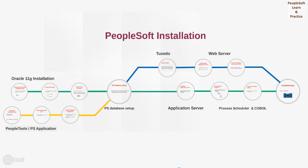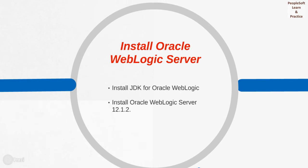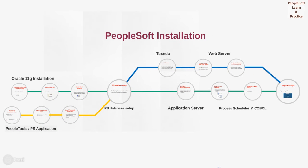Now we need to create a web server and app server. First, we need to install Tuxedo — there is an installation file downloaded from eDelivery and we run through that to install Tuxedo. After installation of Tuxedo, install Oracle WebLogic Server. First install JDK for Oracle WebLogic, then install Oracle WebLogic Server 12.1.2. Perform setup for Pure Internet Architecture — it is again a GUI-based installation which is quite easy to follow. This way the web server is ready.